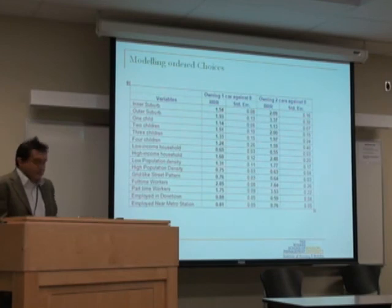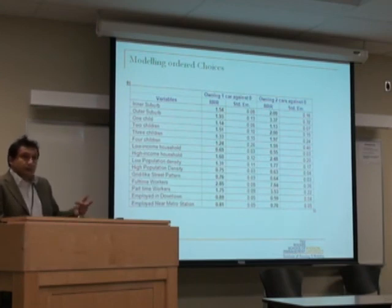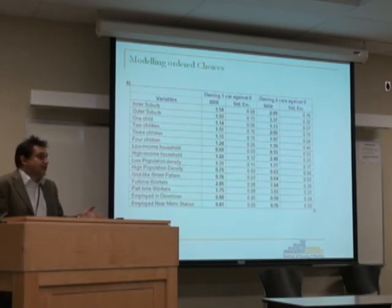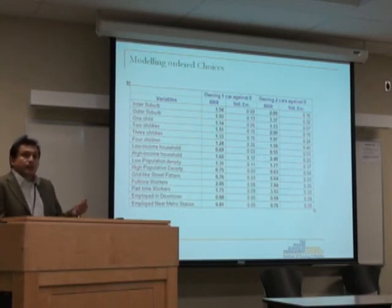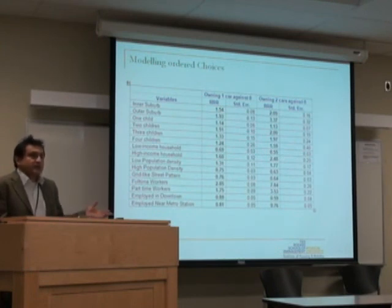We took the number of workers in a household but broke it down into full-time workers and part-time workers, because the literature suggests they have different mobility needs. The underlying assumption is to test whether an increase in full-time workers has a different impact on automobile ownership than an increase in part-time workers. Collapsing this into a single variable would prevent us from appreciating that distinction.